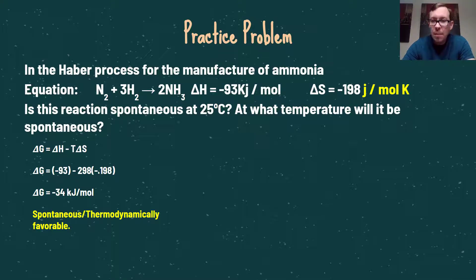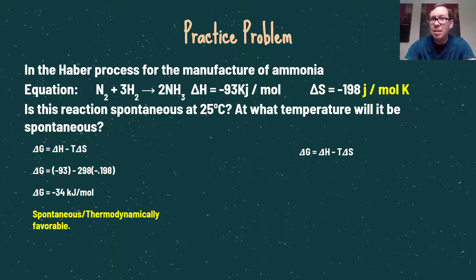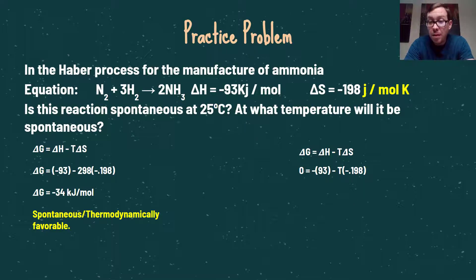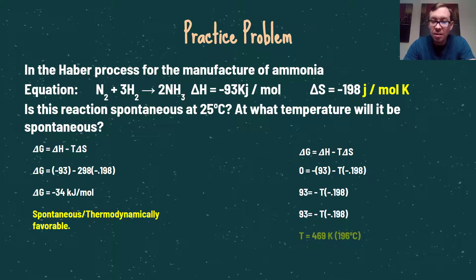Next, we determine at what temperature this reaction becomes spontaneous. We set delta G = 0, which is the turning point between spontaneous and non-spontaneous. With delta H = −93 kJ and delta S = −0.198 kJ/mol·K, we solve for T algebraically. The result is T = 469 K — at that temperature and above, this reaction becomes thermodynamically favorable. These problems are straightforward once you know which variables go where.